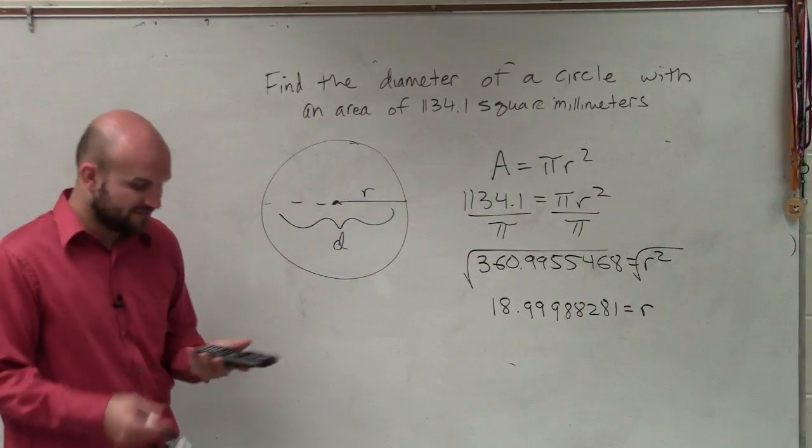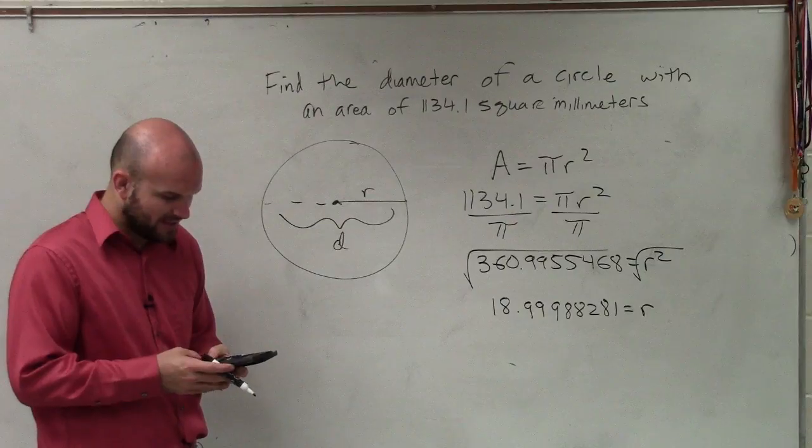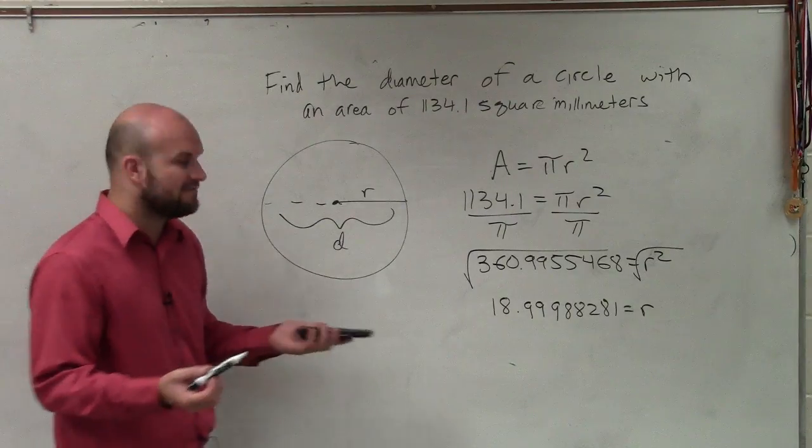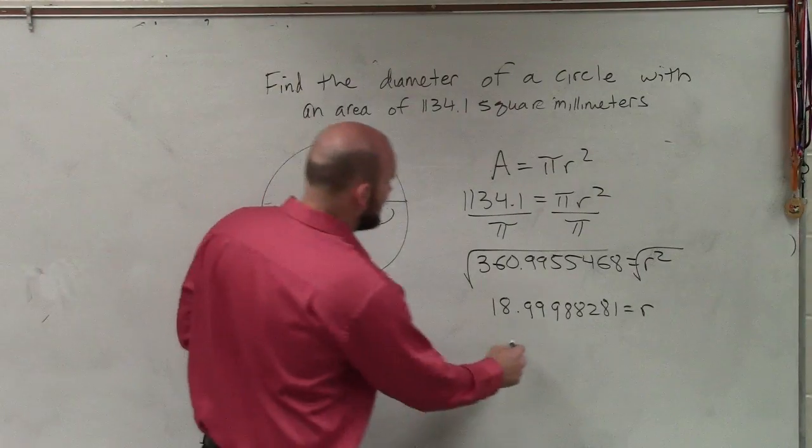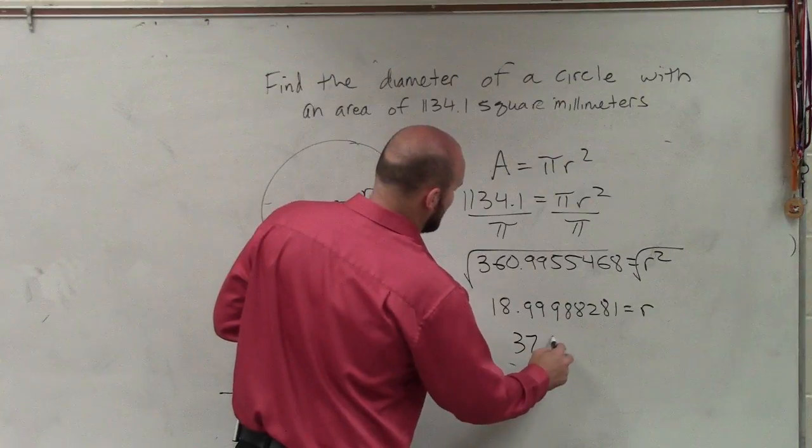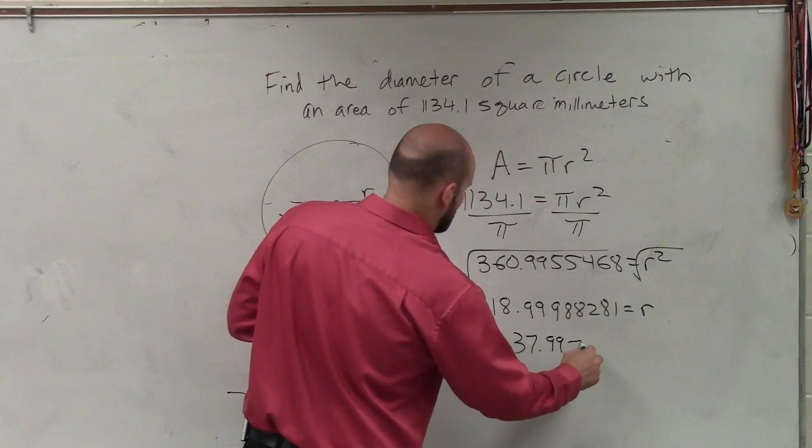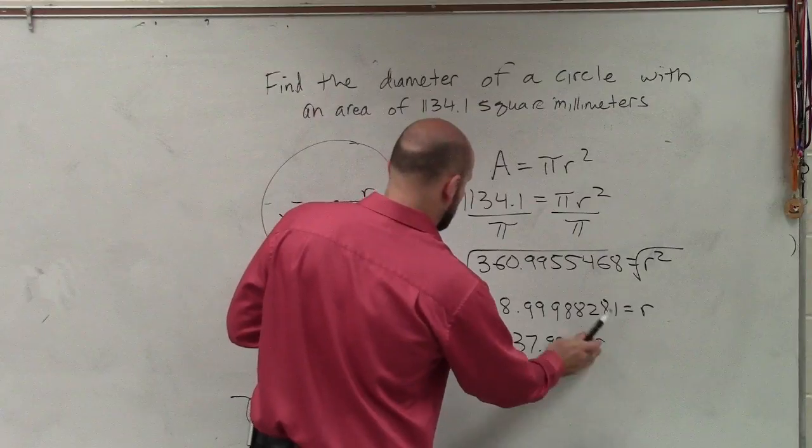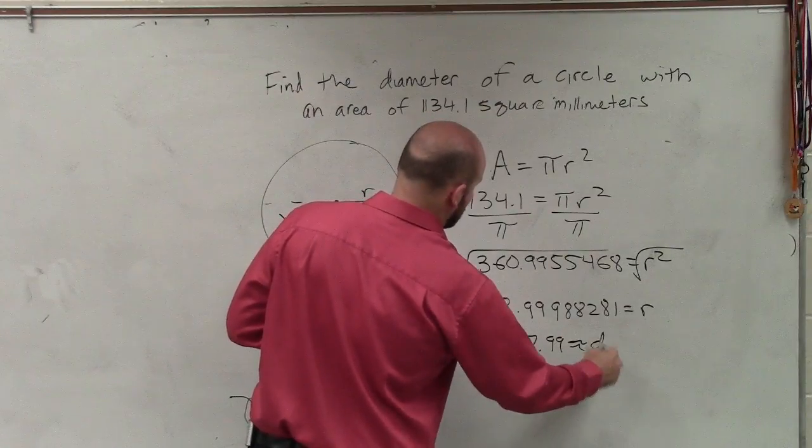Now, obviously, I need to find the diameter, so I just multiply that by 2. And I get 37.99, which, yes, we can now round that. 37.99 is approximately r, or I'm sorry, is approximately your diameter.